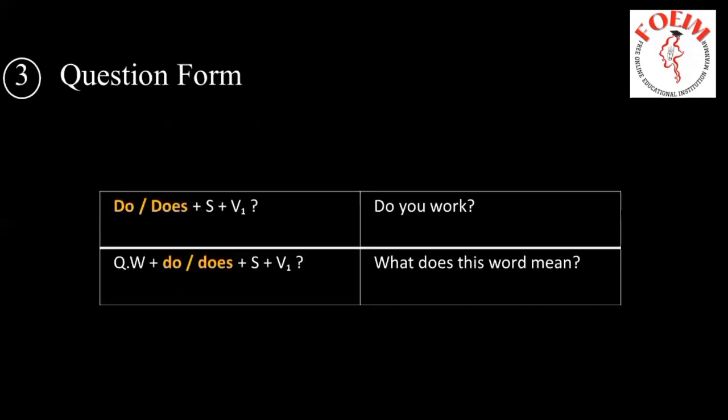The next one is the question form. The question form uses 'do' or 'does' plus subject plus the base form of the verb. For example: do you walk?